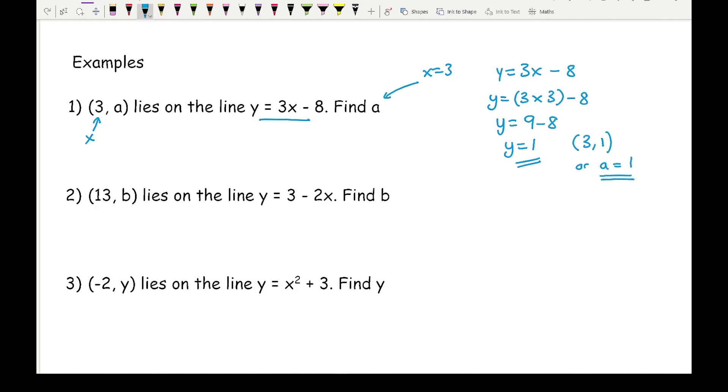Moving on to question 2, it says (13, b) lies on the line y equals 3 minus 2x, find b. For this we know that x equals 13 and y equals b. So if I substitute each of this into the equation, instead of writing y I'm going to write b. And I've got 3 minus 2 times 13.